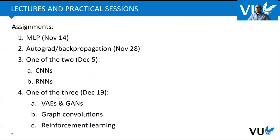We have developed four assignments. The first assignment is about implementing a multi-layer perceptron (MLP), also known as fully connected networks, and this will be done in NumPy. The second assignment is about differentiating tools — autograd and backpropagation — where you will also implement the backpropagation algorithm by yourself in NumPy. These first two assignments are done individually. For the third assignment, done in groups of three students, you can pick either CNNs (convolutional networks) or recurrent neural networks — you pick only one of the two.